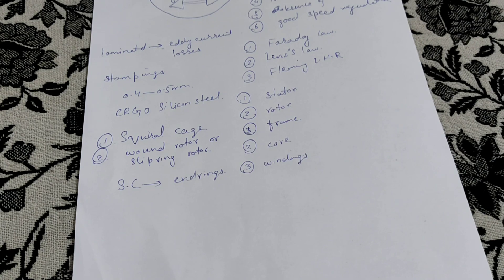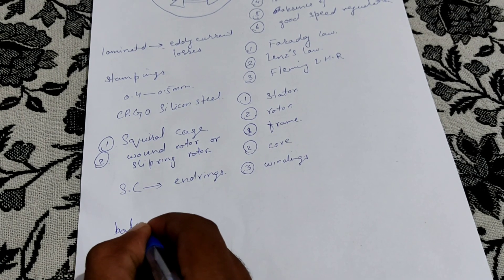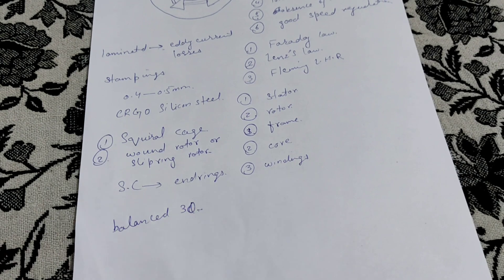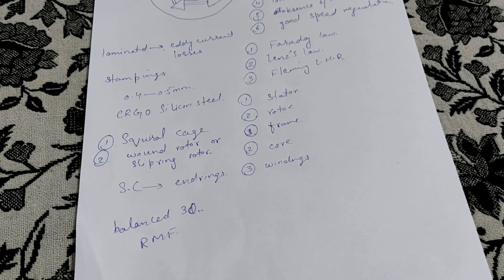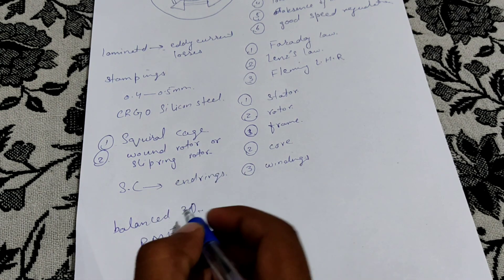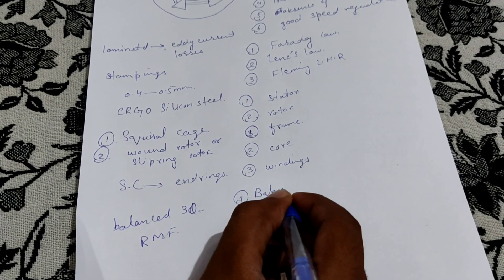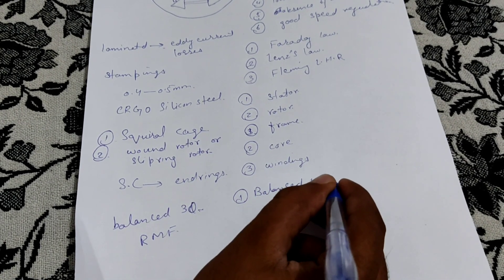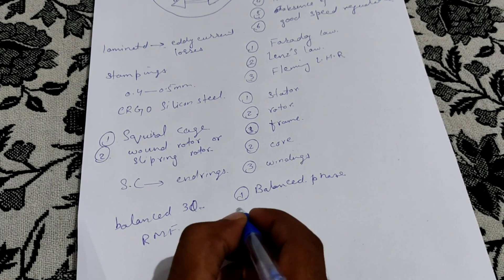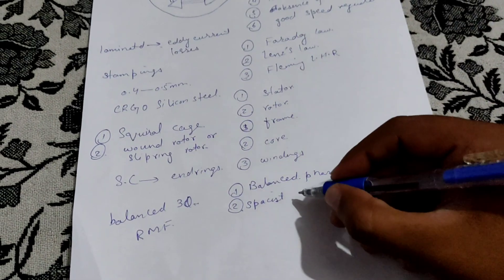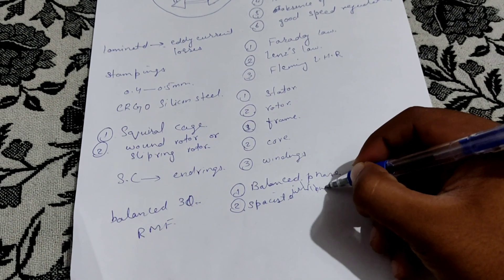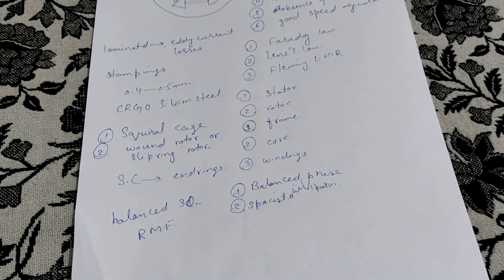Now coming to the working principle of the three-phase induction motor: when a balanced three-phase supply is provided to the three-phase stator winding, a rotating magnetic field (RMF) is produced. The concept behind the RMF requires two conditions: number one is a balanced three-phase supply, and number two is a distributed winding.